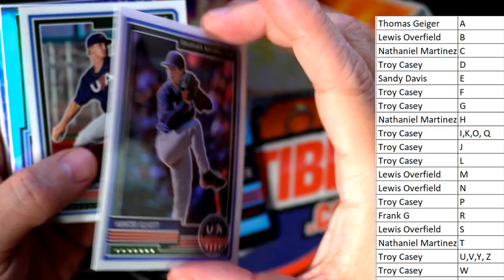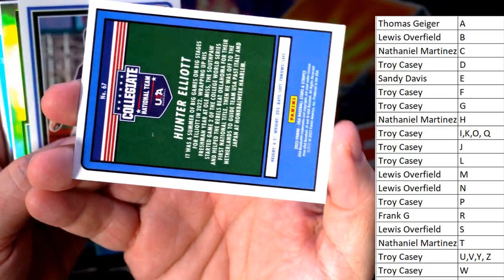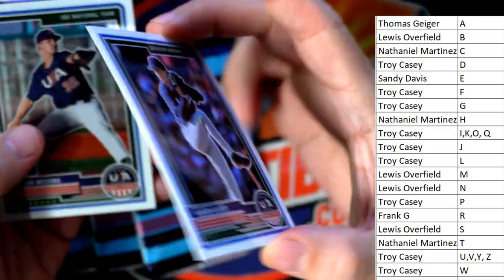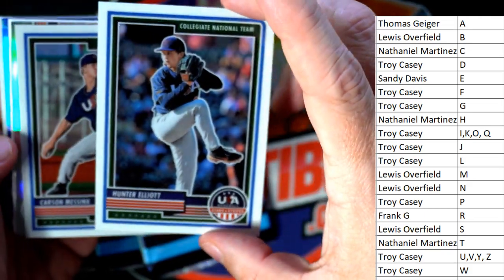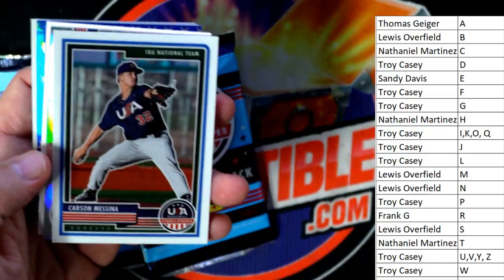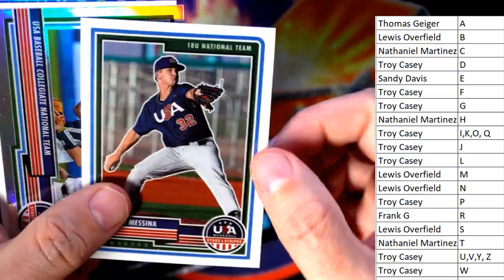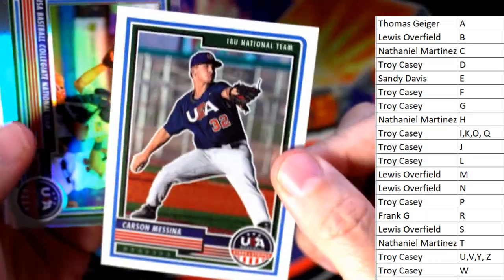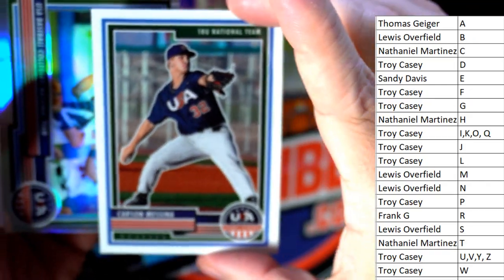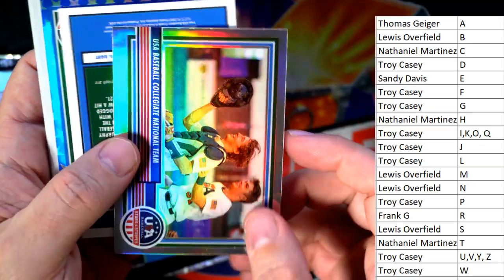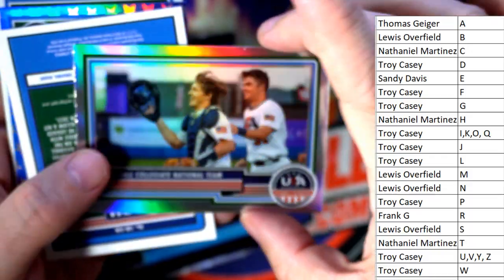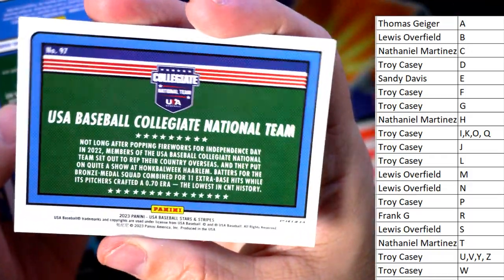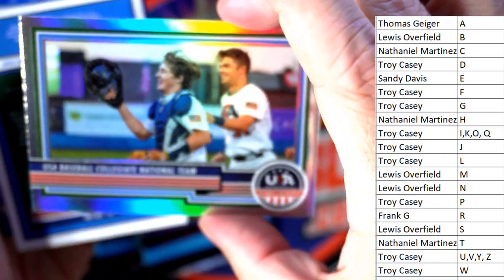These are kind of — wow, these are nice! Nice card stock, thick, shiny — like they said, Optichrome base set. Wow, man. These aren't just paper base — these are nice cards. Every card ships, and here's going to be a little refractor there — pretty nice. USA Baseball Collegiate National Team.